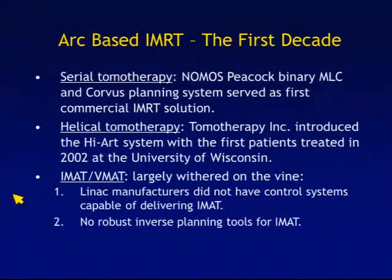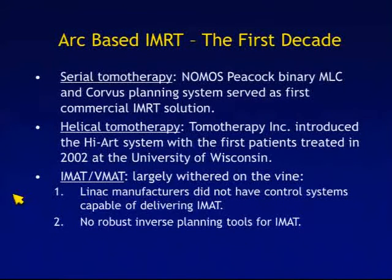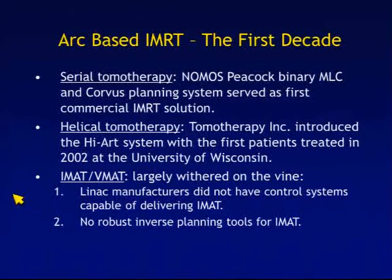Looking at the two decades of rotational IMRT: in the first decade, the first commercial solution was serial tomotherapy, available through NOMOS with the Peacock binary multi-leaf collimator combined with the Corvus inverse planning system — the first commercial IMRT solution. Next was helical tomotherapy introduced by Tomotherapy Inc. with the Hi-Art system, with first patients treated in 2002 at the University of Wisconsin. More recently, Accuray purchased tomotherapy. The IMAT/VMAT technique largely withered on the vine during that first decade, because LINAC manufacturers did not have control systems capable of delivering IMAT, and there were no robust inverse planning tools.